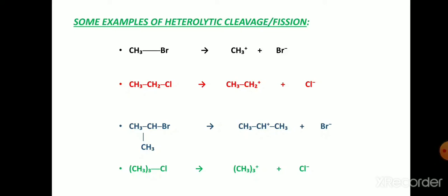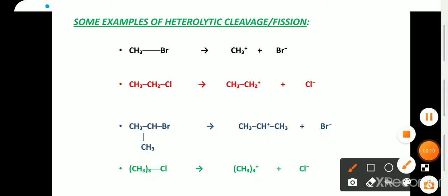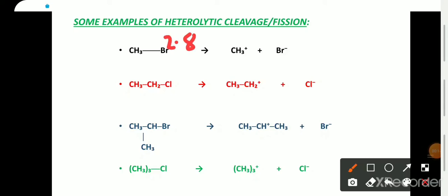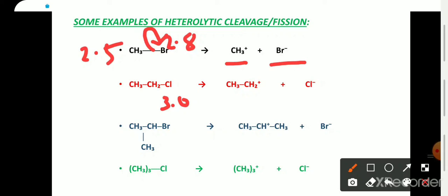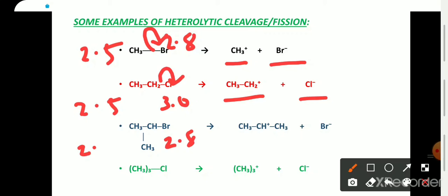These are some examples of heterolytic bond cleavage. Bromine has an electronegativity of 2.8 and carbon has 2.5, so bromine is more electronegative — both electrons shift to bromine, forming a carbocation and a bromine anion. Similarly, chlorine has an electronegativity of approximately 3.0 and carbon has 2.5, so chlorine is more electronegative — both electrons shift to chlorine, forming a primary carbocation and a chlorine anion. In another case, bromine (2.8) is more electronegative than carbon (2.5), giving a secondary carbocation and a bromine anion.